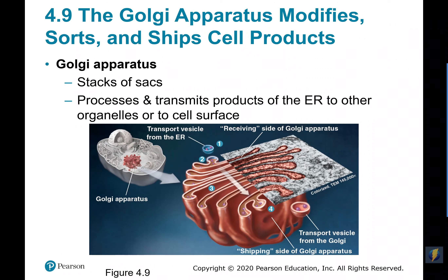From there, those little transport vesicles from our ER go to a structure called the Golgi apparatus, which is essentially a series of membranous sacs. I like to think of the Golgi as sort of a warehouse — there's a receiving side and a shipping side. The receiving side gets the vesicle from the ER with the protein in it. The vesicle is then transported throughout the Golgi, gets processed and packaged, and then another vesicle pinches off the Golgi apparatus to ship the protein to the surface of the cell for export.